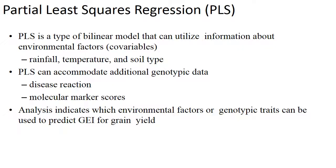The third model is partial least squares regression — a type of bilinear model that can utilize information about environmental factors like rainfall, temperature, soil type. It can accommodate additional genotypic data like disease reaction and molecular marker scores. Analysis indicates which environmental factors or genotypic traits can be used to predict the G×E interaction for grain yield.